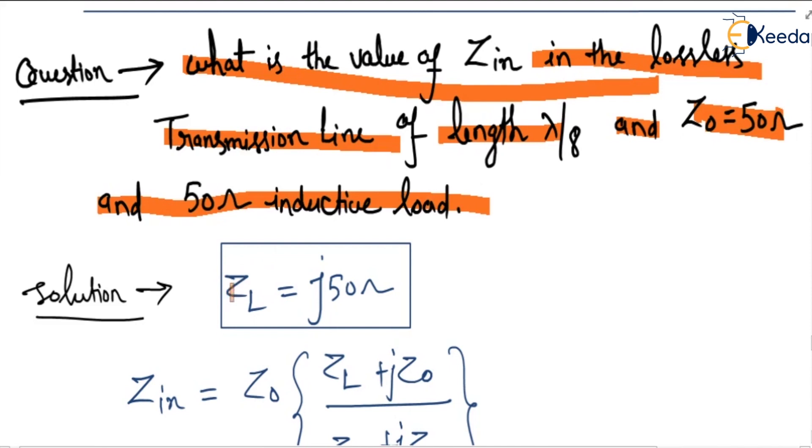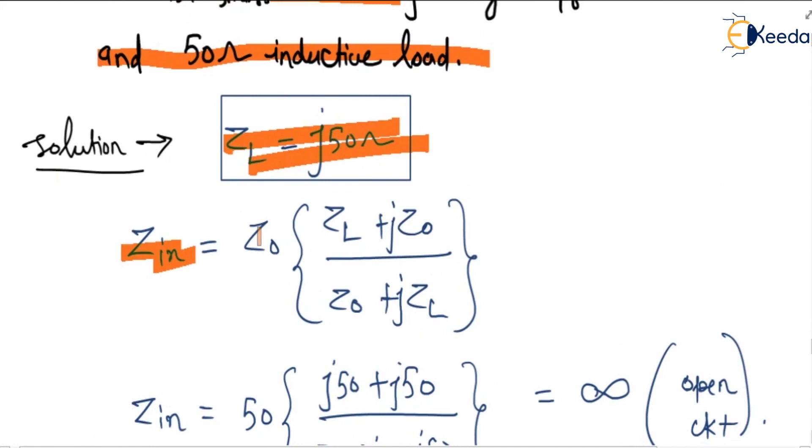So ZL is given as 50 because it is inductive load, and Zin equals Z0 times (ZL plus jZ0) divided by (Z0 plus jZL). This is the formula for lambda by 8th length.